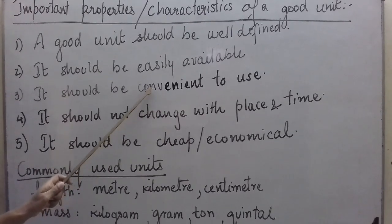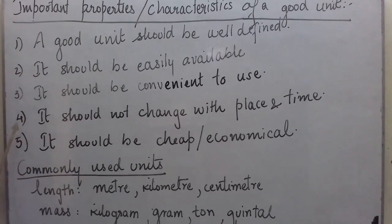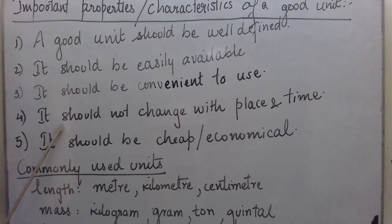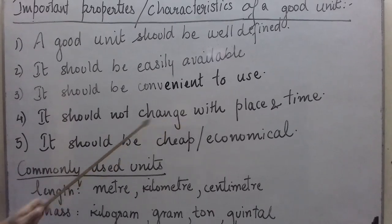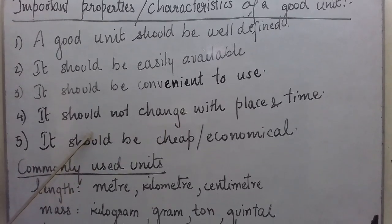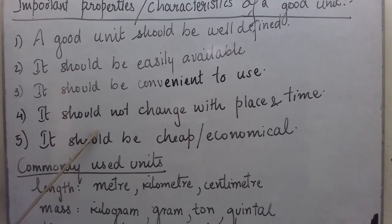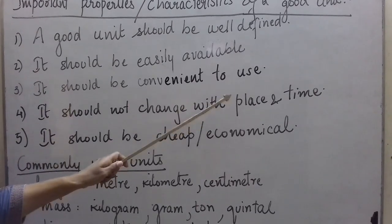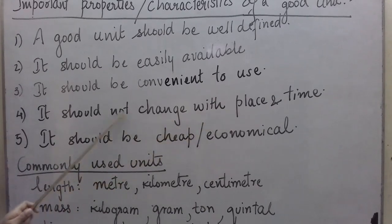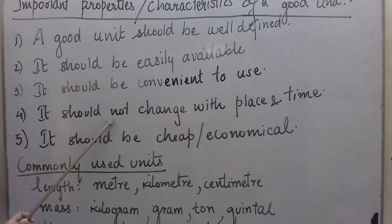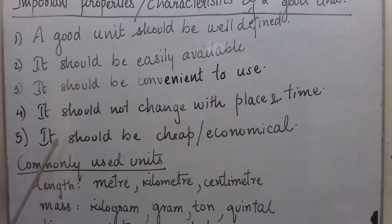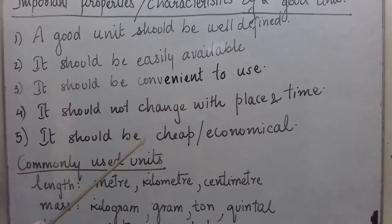Physical balances and beam balances can be used to measure mass. Next, a good unit should not change with place and time. If meter is a good unit of length, then today, tomorrow, day after tomorrow, even after one year, one meter should mean the same length. And even when you go abroad or to different places in the world, one meter should mean the same length. Lastly, it should be cheap and economical — meter scales, measuring tapes, beam balances, physical balances, watches, and clocks are all easily available at cheap rates. So these are the five important characteristics of a good unit.